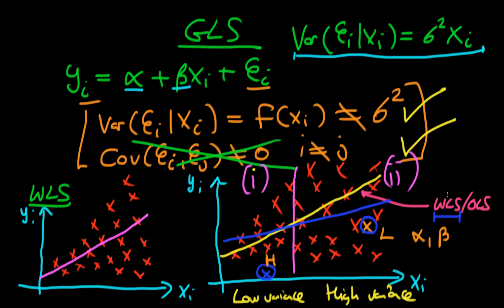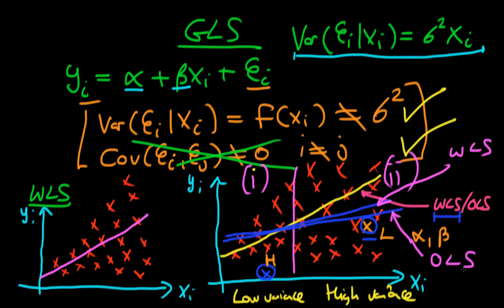That's what weighted least squares does. Ordinary least squares gives both points equal weighting, so its line of best fit gets pulled more toward the high-variance region point. The weighted least squares line is more restrained, and the benefit of using it over ordinary least squares is that it takes into account the extra information — giving less weight to points in higher variance regions, which turns out to be a very sensible thing to do in many applications.